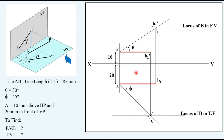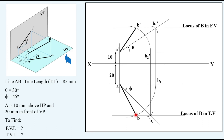To fix the positions, keep your compass on A-dash, take the distance from A-dash to B2-dash, and rotate it upward to intersect with the locus line. This transfers the point onto the locus — label it B-dash and join it to get the final front view. Similarly, keep the compass on A, take the distance A to B1, rotate it to intersect the locus, obtaining point B, and join it with A. A-B is the required top view. You can now measure: A-dash B-dash is the front view length, and A-B is the top view length.